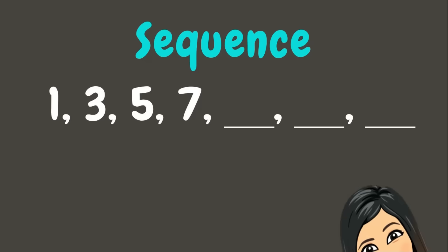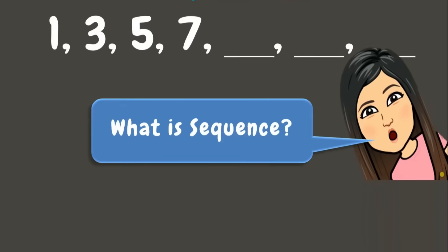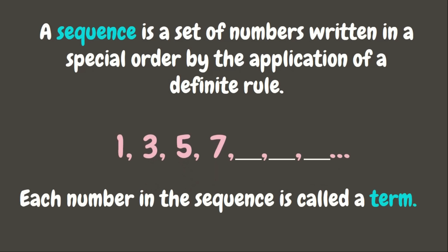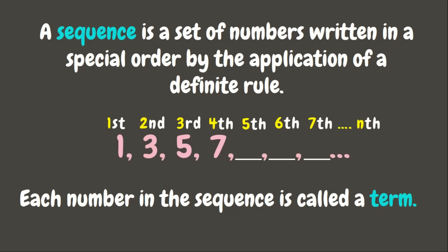This is what we call a sequence. A sequence is a set of numbers written in a special order by the application of a definite rule. Each number in the sequence is called a term. Here we have the first term, second term, third, fourth, fifth, sixth, seventh, and so on, which is the nth term.